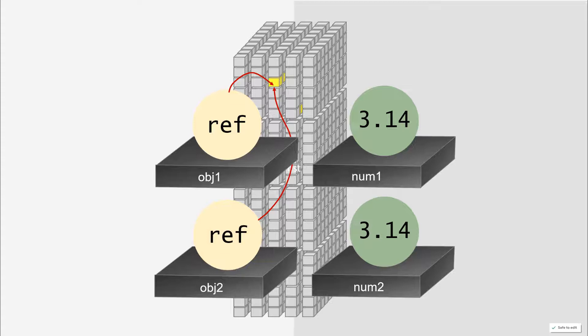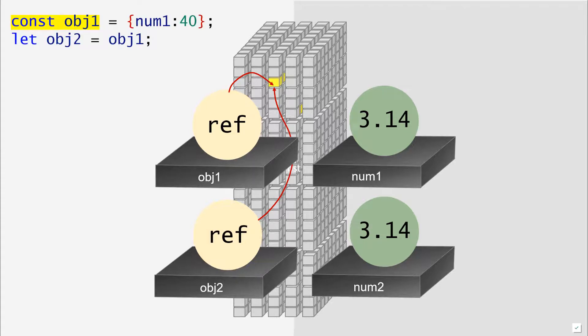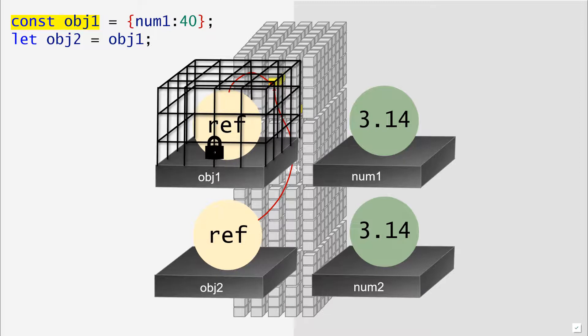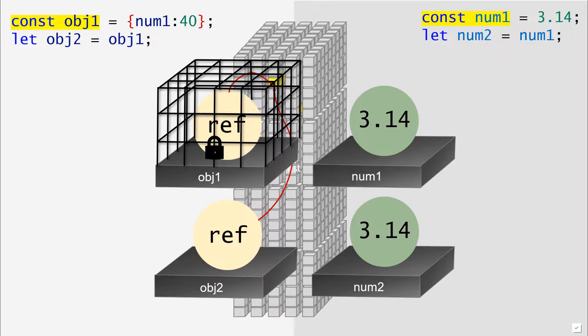Let us use the same example to illustrate something else which people learning JavaScript often find difficult to understand: the relationship between using the const keyword and an object. If we have: const object1 equal to the same object with num1 set to 40, we can think of this constant as a cage being placed around the value on top of the shelf. What is important to understand is that we are placing the cage on top of the reference to the object and not the object itself — and this is where a significant part of the confusion actually comes from.